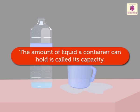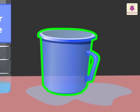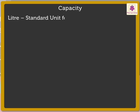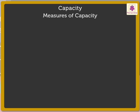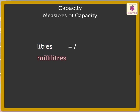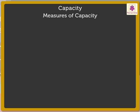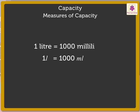The amount of liquid a container can hold is called its capacity. The amount of water that the jar is holding is called the capacity of the jar. Liter is the standard unit for measuring capacity. We measure the capacity of a container in liters and milliliters. Liter is the bigger unit and milliliter is the smaller unit of capacity. We know that 1 liter is equal to 1000 milliliters.